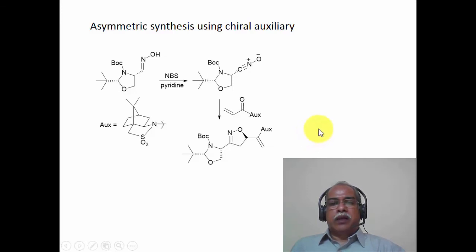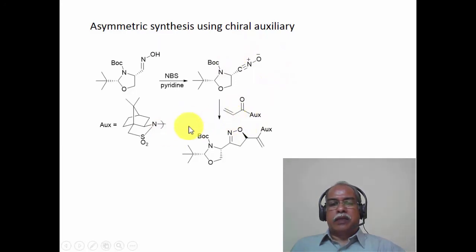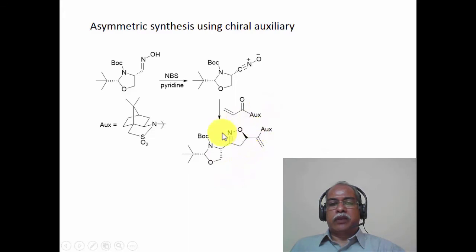Asymmetric synthesis using a chiral auxiliary is illustrated here. The cycloaddition process is carried out in an asymmetric manner using a chiral auxiliary — a camphor-based sultam. The oxime is made to undergo alpha-bromination with N-bromosuccinimide, followed by treatment with pyridine to give HBr elimination and produce the nitrile oxide. The nitrile oxide is treated with the acrylate, which is an acrylamide derivative bearing the chiral auxiliary. Because an enantiomerically pure chiral auxiliary is used, asymmetric induction takes place, resulting in stereoselective formation of an isoxazoline derivative.